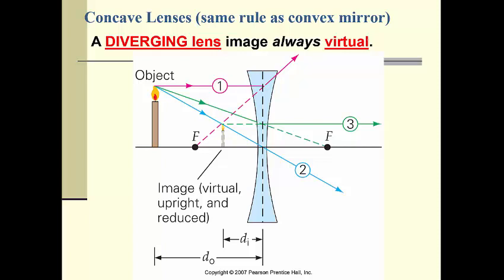Moving on to lenses: a concave lens is diverging, meaning the focal length is negative. The image is always virtual, just like a convex mirror. Mathematically, 1/d_i = 1/f − 1/d_o: since f is negative and d_o is always positive, d_i is always negative. So we can see mathematically that the image is always going to be virtual for a diverging lens.